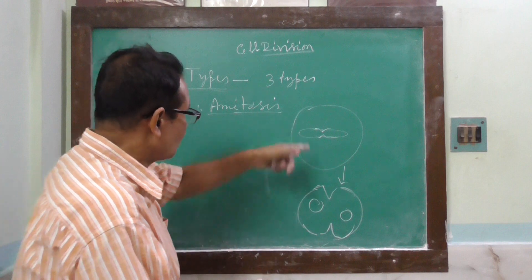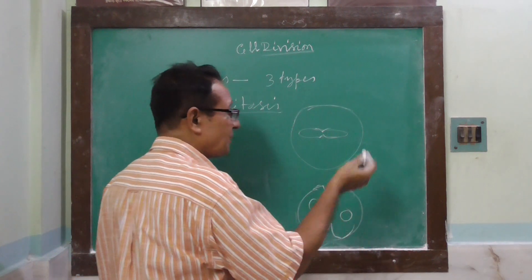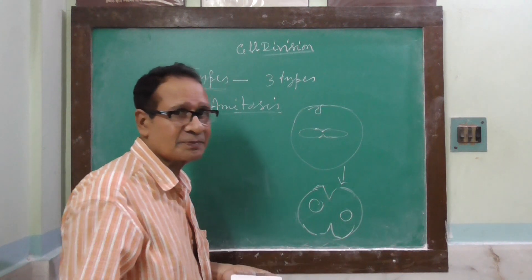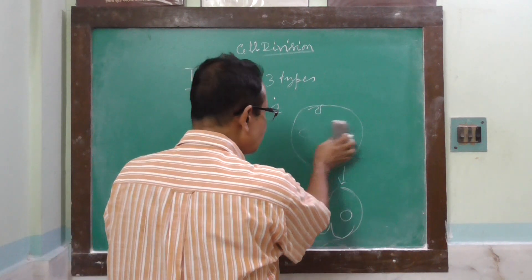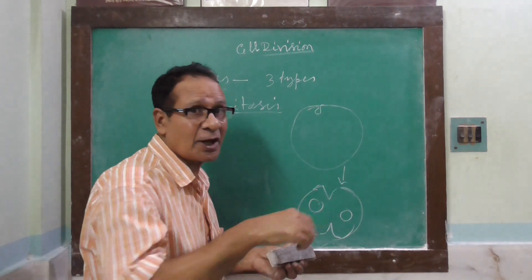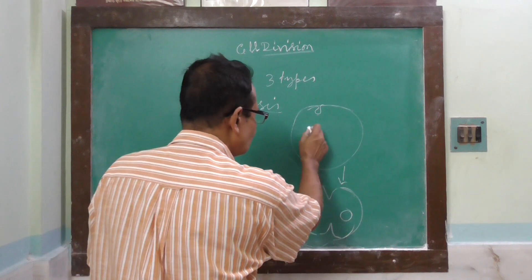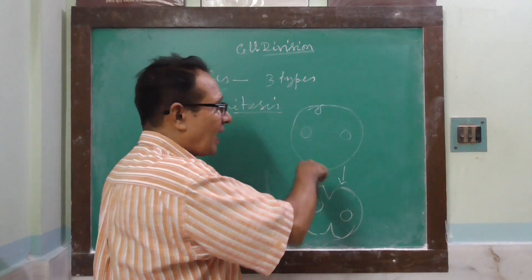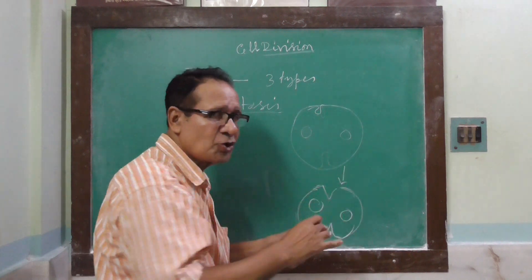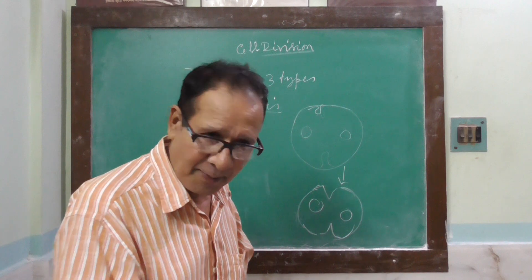In reality, during division in a prokaryotic cell like bacteria, the mesosome is present. In the mesosome region, the circular DNA which functions as a chromosome divides into two, and then the cytoplasm divides into two halves. This is known as amitosis.